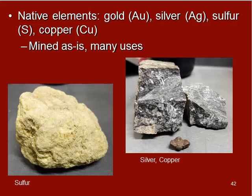Then we have native elements — basically pure gold, pure silver, pure sulfur, or pure copper. These are mined as-is and used in a wide variety of things like jewelry, wiring, and all sorts of stuff. Here you can see copper in the foreground and a rock that actually has silver in it. Getting these metals out of rocks is tricky because many native elements, sulfides, and oxides are within the rocks — not as pure deposits. You don't see just a huge chunk of silver; instead you have bits of silver, pyrite, or galena in an area that is drilled or mined out.